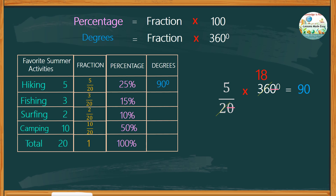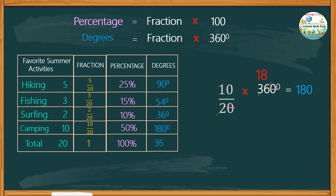Do the same with the next. For fishing, we have a fraction of 3 over 20 — simply change 5 to 3 — then multiply 3 by 18, where we get 54, or 54 degrees. For surfing, just change the numerator to 2, then multiply by 18, giving a product of 36, or 36 degrees. Lastly, for camping, change the numerator to 10, multiply by 18, giving a product of 180, or 180 degrees. Altogether, we have a total of 360 degrees.